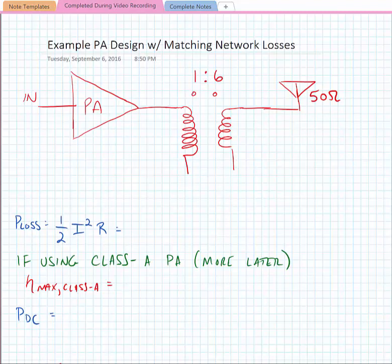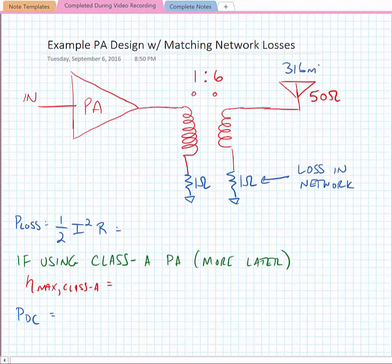We're going to add some loss to the transformer. Let's just say that each winding has about one ohm of resistance in series with it. So we need 316 milliwatts at the antenna. That means that we need a voltage swing of about 4 volts.